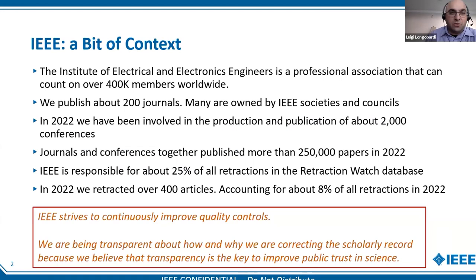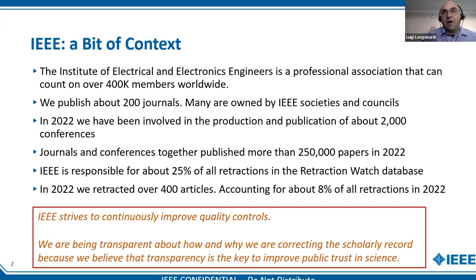Just to put IEEE in context: we are the Institute of Electrical and Electronic Engineers, a professional association with over 400,000 members. We serve our members in a variety of ways, one being by publishing our journals. We have a portfolio of about 200 journals, some owned by IEEE societies and councils, and we also organize conferences — about 2,000 conferences last year. Together, journals and conferences published about 250,000 papers last year. That's quite a large corpus of articles to be responsible for in terms of ethics, which is what I do with my team at IEEE.